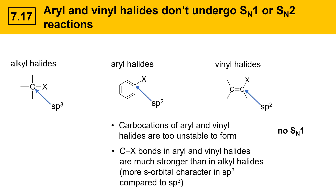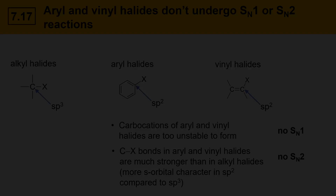This makes aryl and vinyl halides poor substrates for SN2 reactions. The bottom line is these aryl halides and vinyl halides should not be confused for alkyl halides. They undergo reactions of their own type, but they don't do SN1 or SN2.